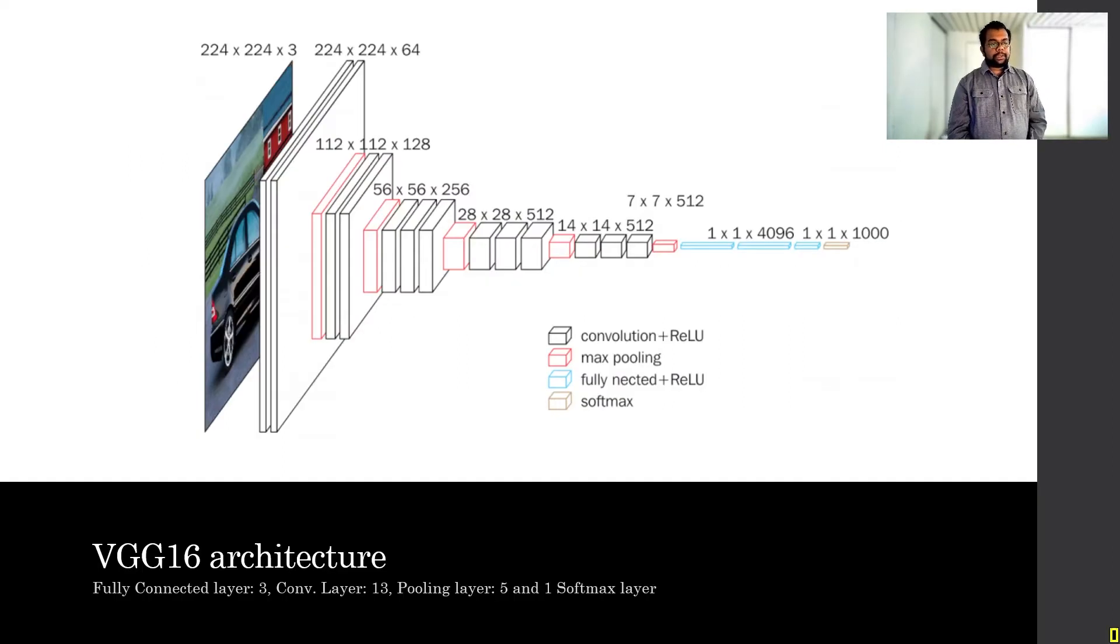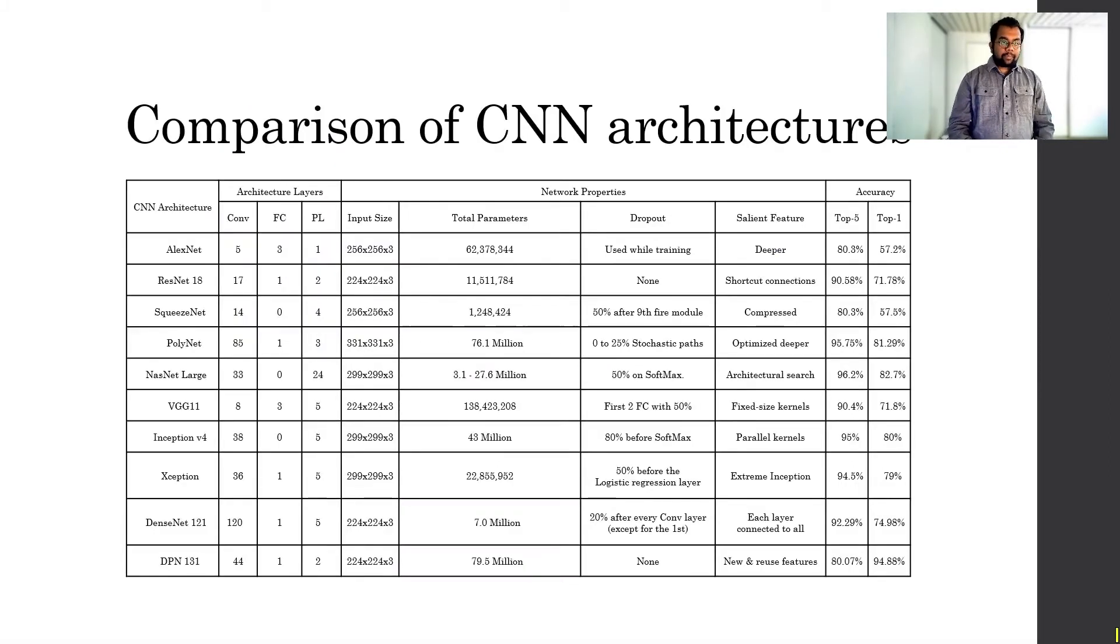This is VGG Architecture 16, and you can see that there are several layers of convolution here. There are some fully connected layers here. There are a total of three fully connected layers, a total of 13 convolution layers, five pooling layers, and one softmax layer at the end. And there exists this sort of architecture for all the networks that we have used in this research. They have different architectures and different layers.